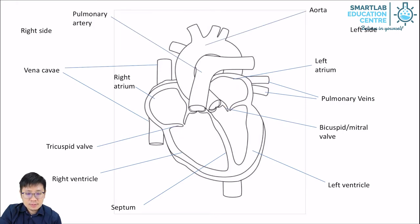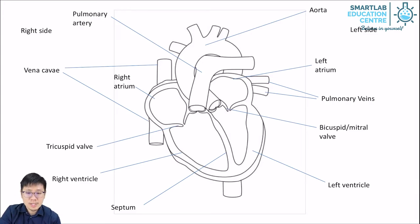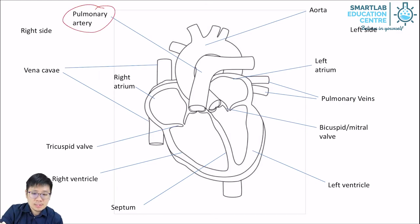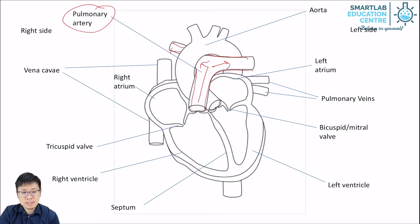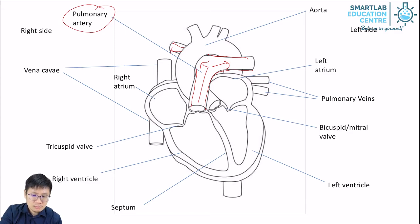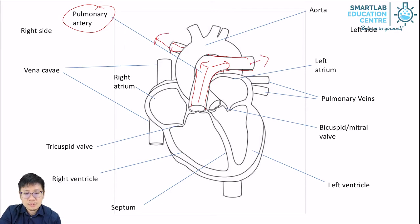Next, we're going to talk about the aorta and the pulmonary artery — these two are arteries. The pulmonary artery is this T-shaped one over here. It's actually just one artery branching out into two, because the pulmonary arteries divide to supply the two lungs. Pulmonary means lungs, so the pulmonary artery divides into the right and left artery to supply blood to the lungs.